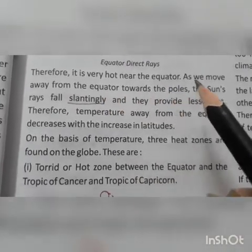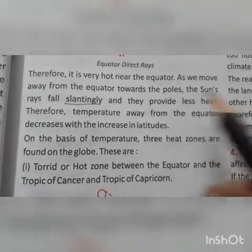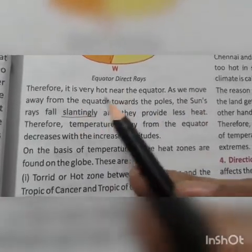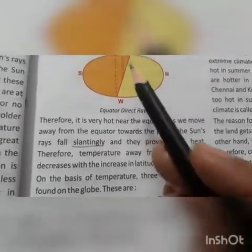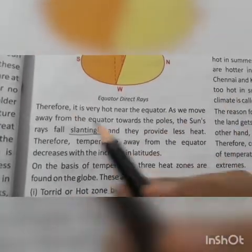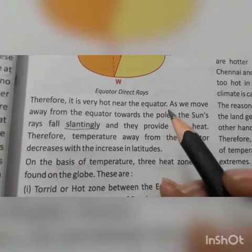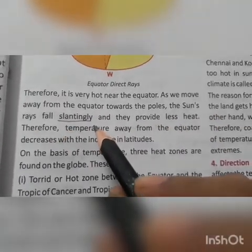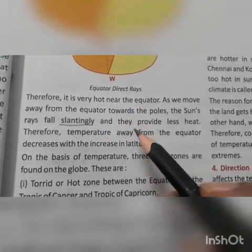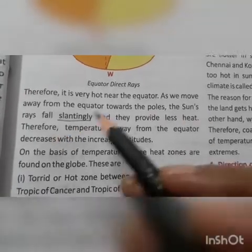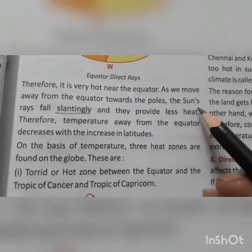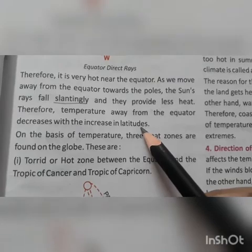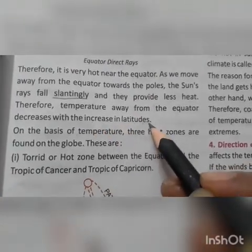Therefore it is very hot near the equator. As we move away from the equator towards the poles, the sun's rays fall slantingly and they provide less heat. Slantingly means sloping. They do not fall directly — they fall slantingly and provide less heat than at the equator. Therefore, temperature away from the equator decreases with the increase in latitude. With increasing latitudes, the temperature decreases.